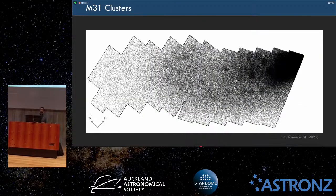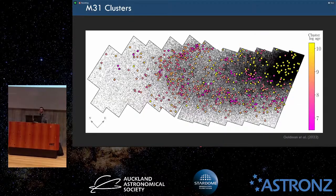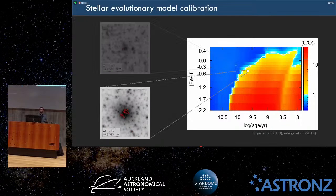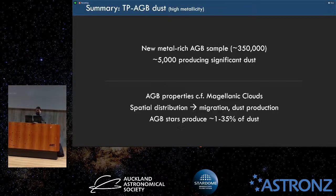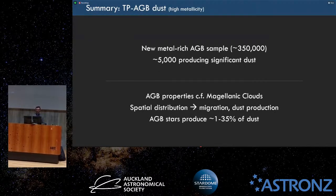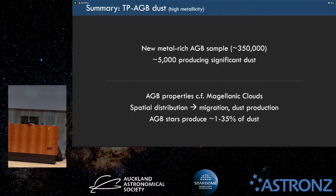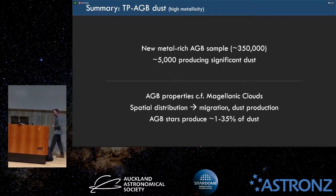We've also detected clusters where we have precise measurements of mass and metallicity, and we can use it to calibrate stellar evolutionary models where these boundaries are relatively unknown. The big things to take away are that we have this huge new sample — a bunch of stars producing dust. You can compare them to other galaxies, look at the spatial distribution as a galaxy probe, and we estimated how much these stars contribute to the dust in Andromeda: between 1 and 35% — a huge range, but much better than the previous range of 0.1 to 100%.